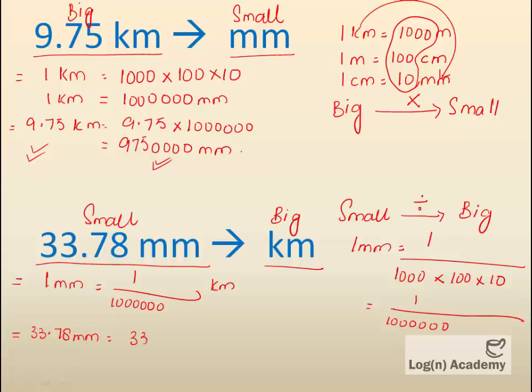We divide 33.78 by 1,000,000. The answer is 0.00003378 km. So 33.78 mm equals 0.00003378 km.